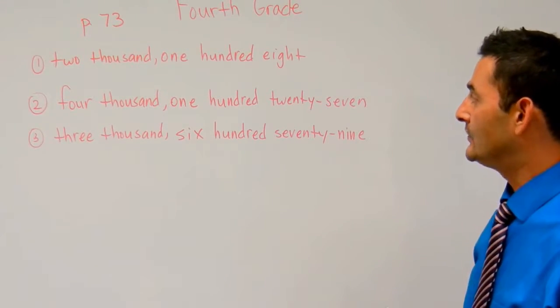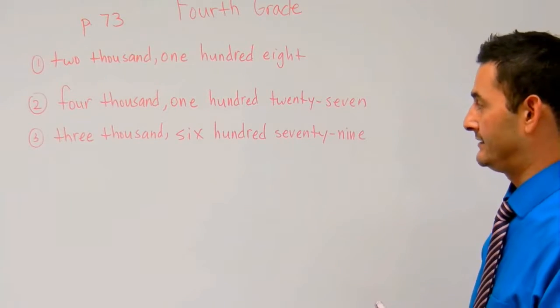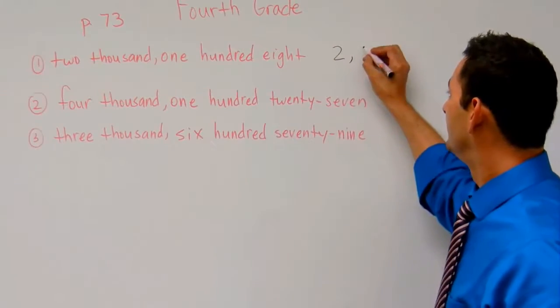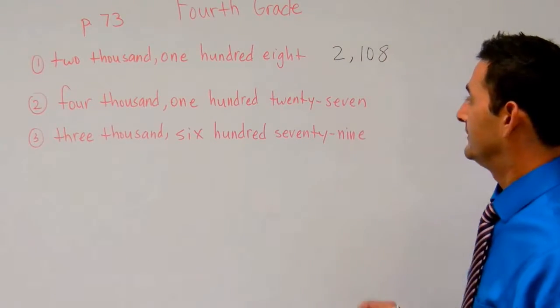So number 1 says 2108. So here we have 2,000 comma 108.